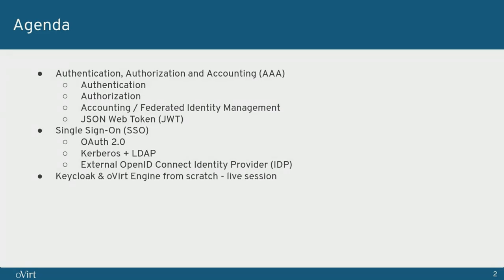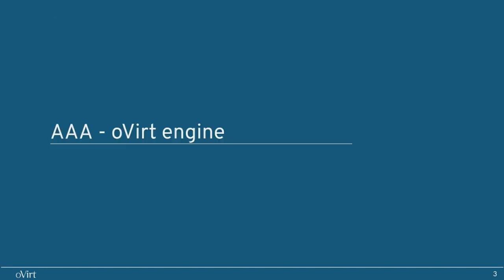The presentation is divided into two main parts. In the first part, I will walk you over the main concepts and components that general authentication is built on. I will mostly focus on things relevant to oVirt engine. The second part will be a demo showing how to configure an external identity management provider. Let's start with the AAA module.